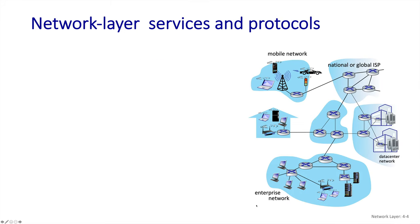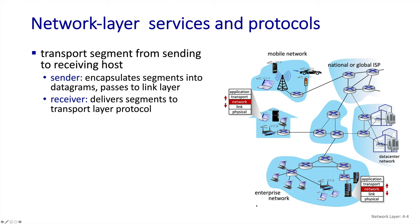Going back to this architectural picture that we've been using since the beginning of the course, we are now focused on services provided by the network layer, or layer 3. The network layer receives segments from the transport layer and encapsulates them into datagrams to be forwarded over the network. On the receiving side, it decapsulates the segments from the datagrams and passes them up to the transport layer.